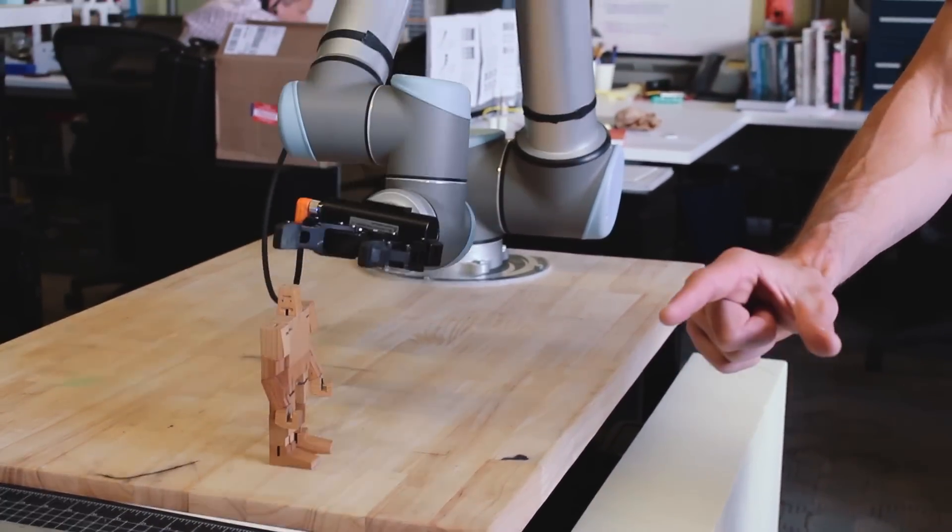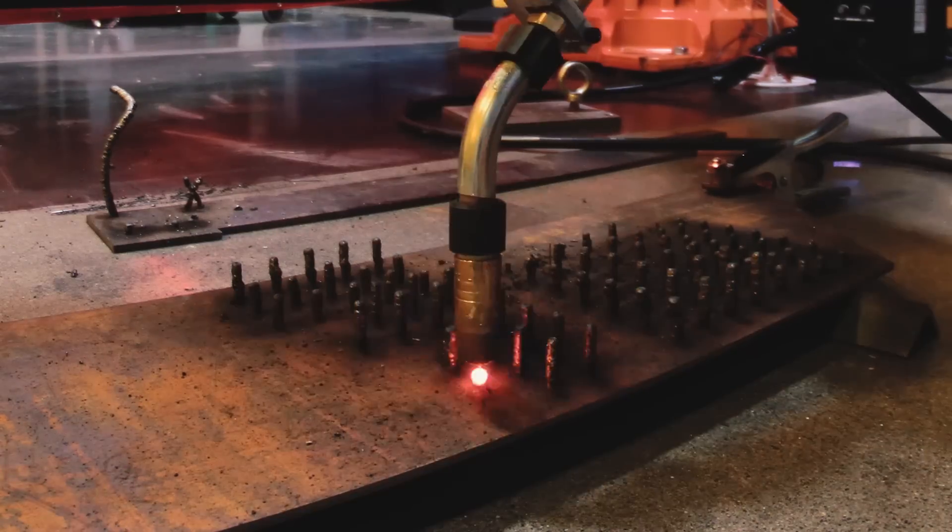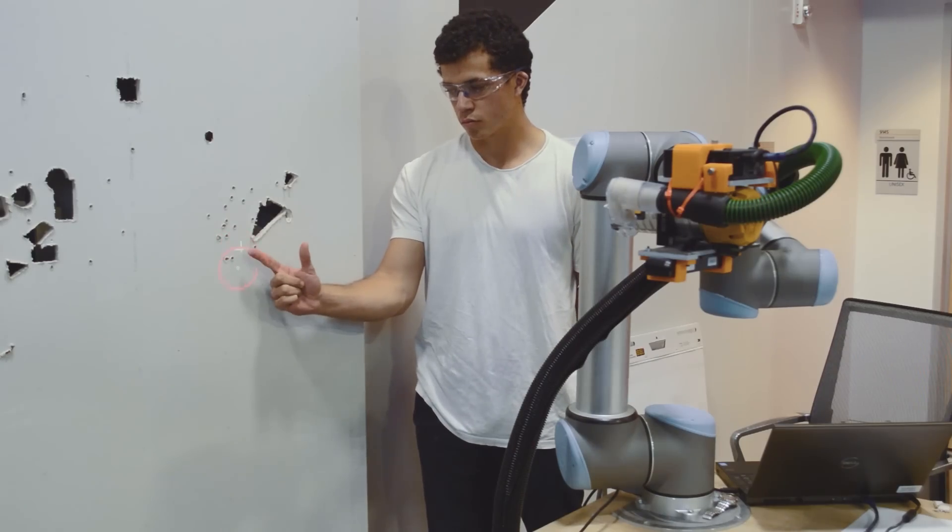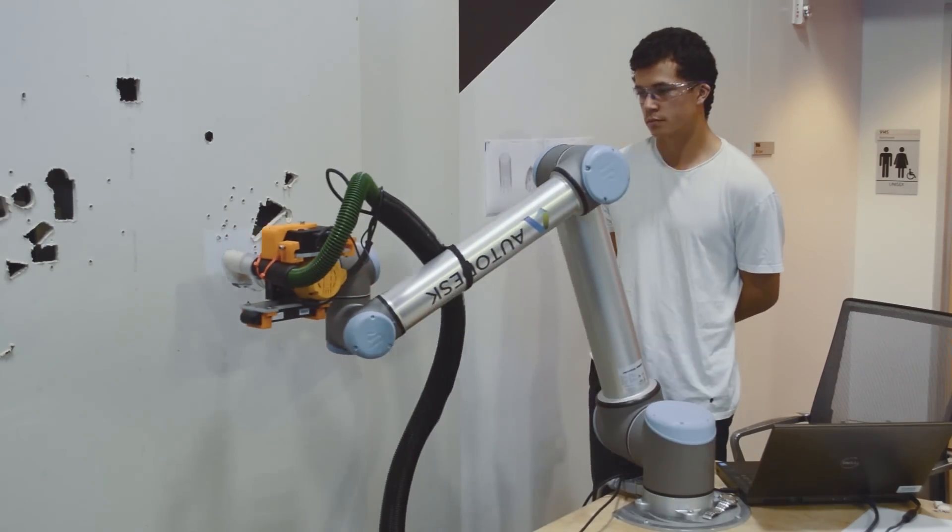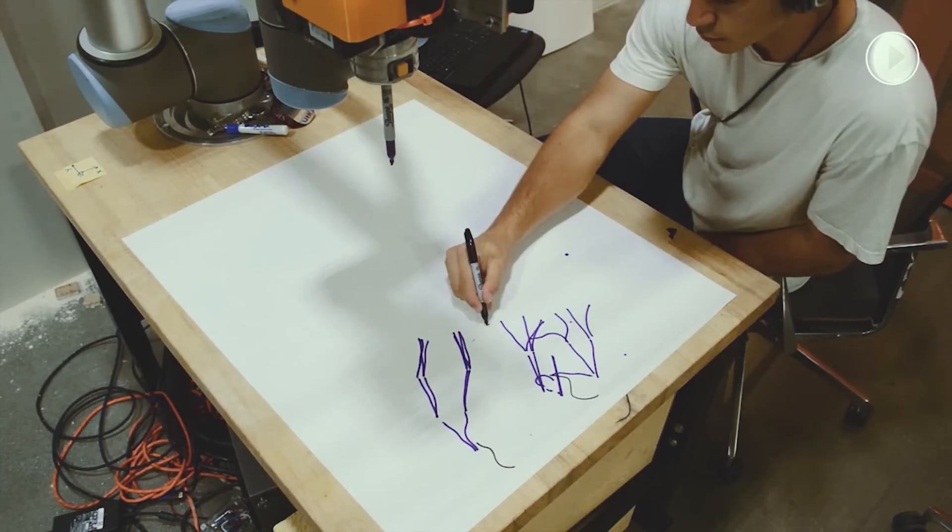Industrial robots are really fantastic CNC machines. You put a different tool at the end of the arm and all of a sudden they can do a whole different thing. So in the morning you can be doing spot welding, in the evening you can be painting. It's just highly adaptable.